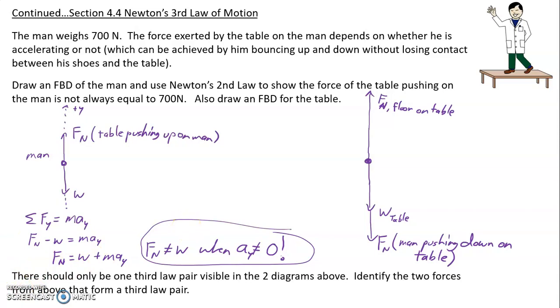Are there any third law pairs visible on these two free body diagrams? Let's look carefully. How about this force and this force? Well, they look equal. But remember, they're not equal if he's bouncing up and down. And not only that, they're not a third law pair because they're both acting on the same object. This is the force of the earth pulling down on the man. This is the force of the table pushing up on the man. That's not a third law pair, those two.